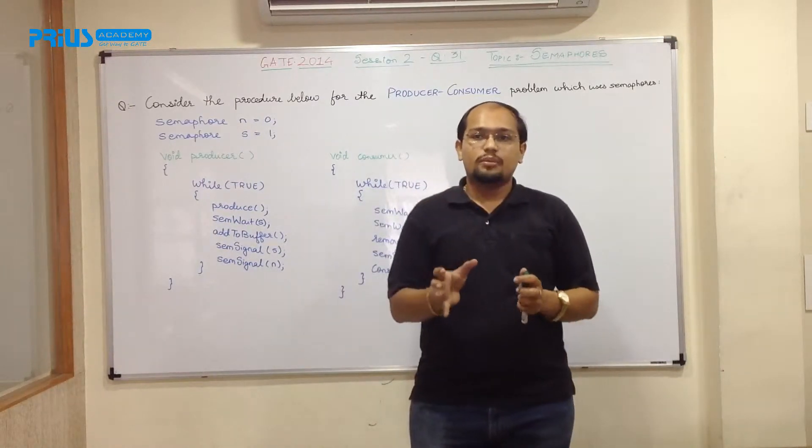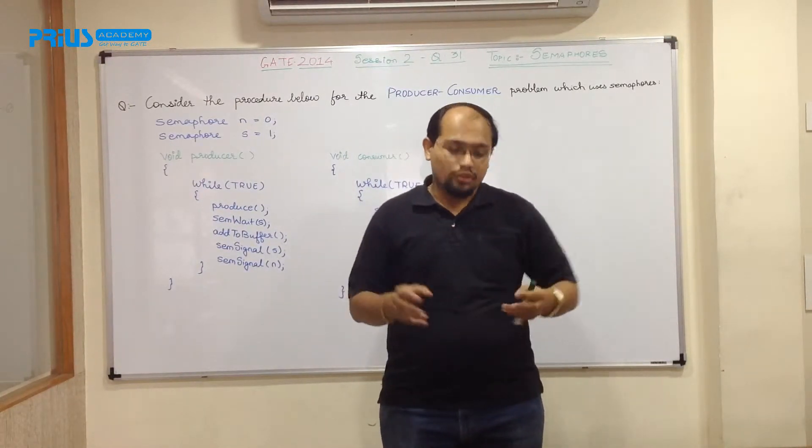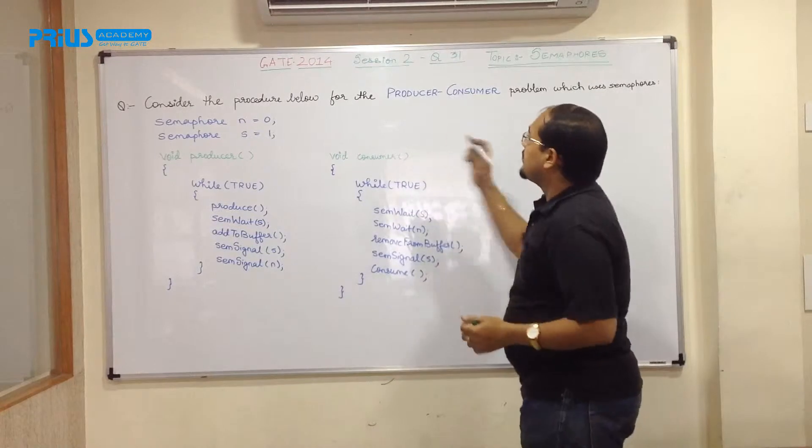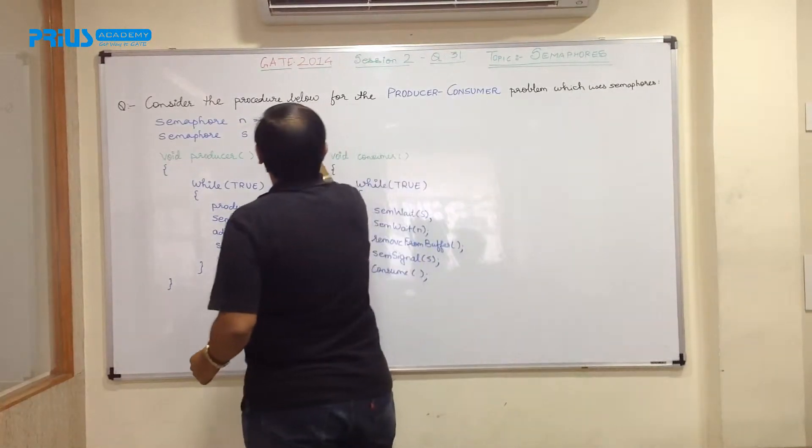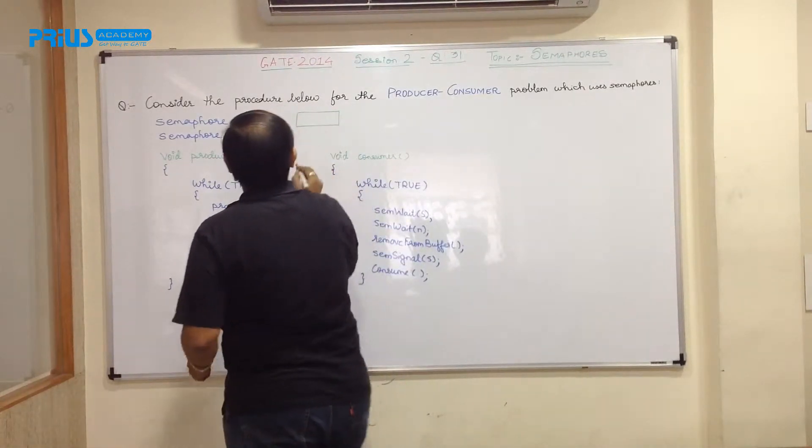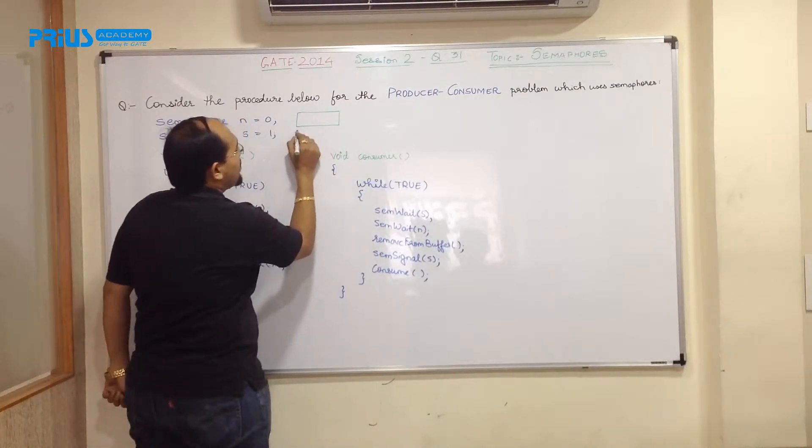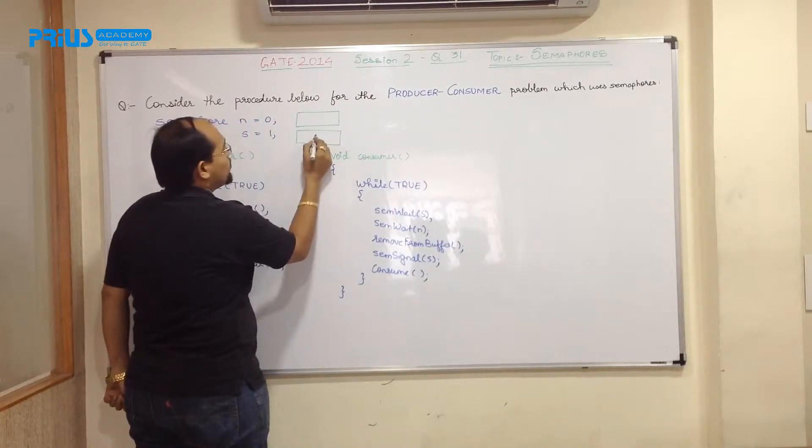Now what actually is semaphore? Semaphore is a shared variable, shared variable between the processes. Assuming that semaphore n is having this memory space and semaphore s is having this memory space whose value is initialized to 1 and 0.